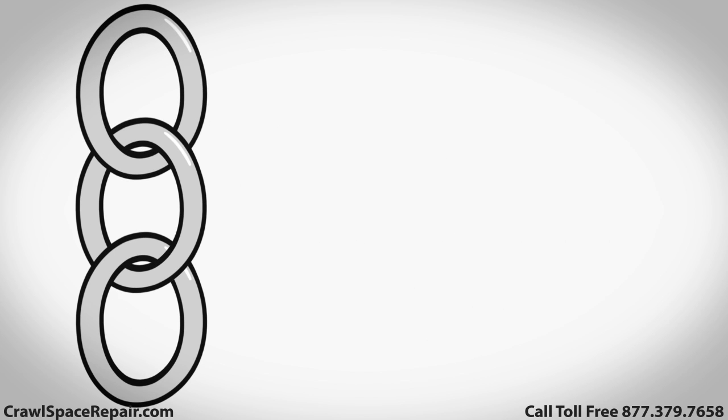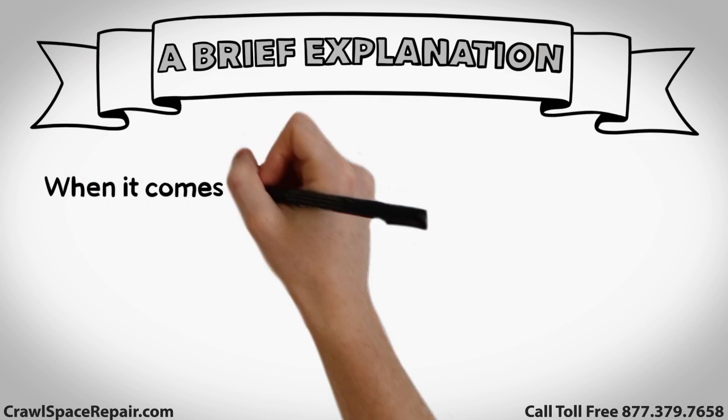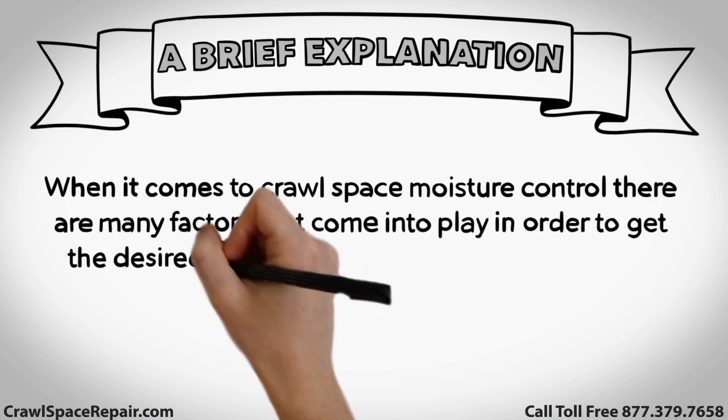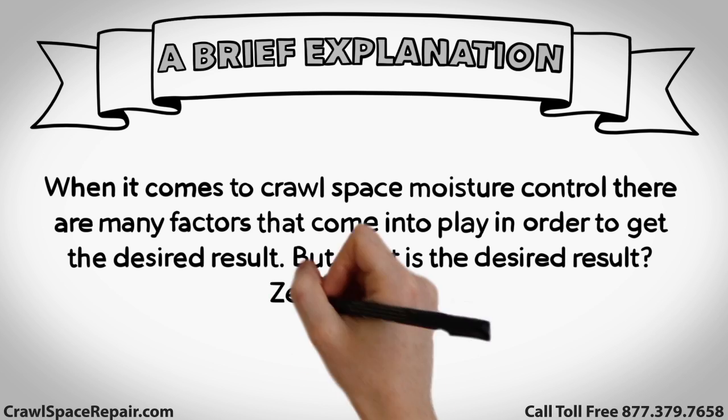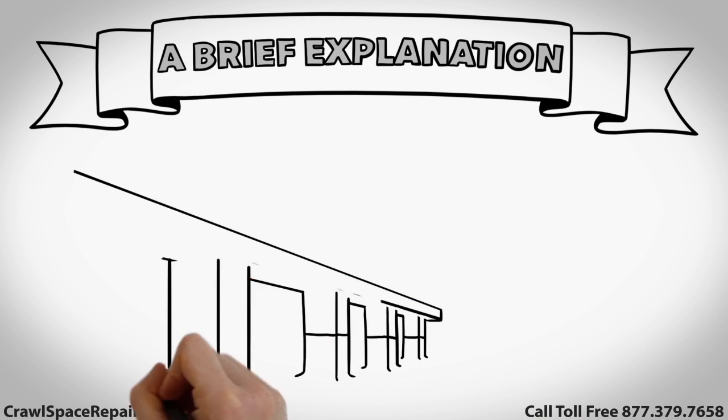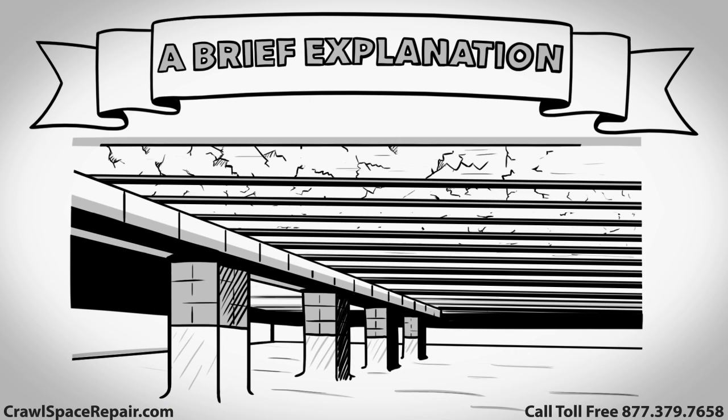After all, a chain is only as strong as its weakest link. Here's a brief explanation. When it comes to crawl space moisture control, there are many factors that come into play in order to get the desired result. But what is the desired result? Zero moisture? No. Moisture levels that are too low will cause a whole new set of problems for your home, like a dried cracked and weakened floor structure.